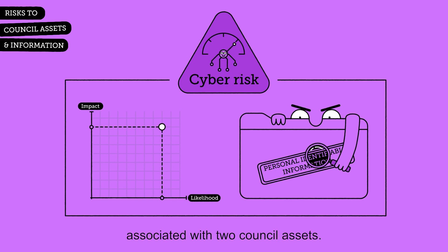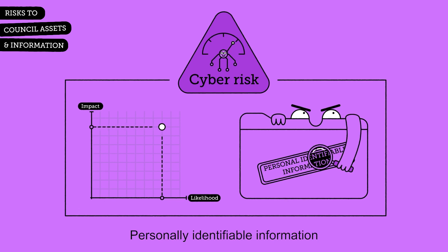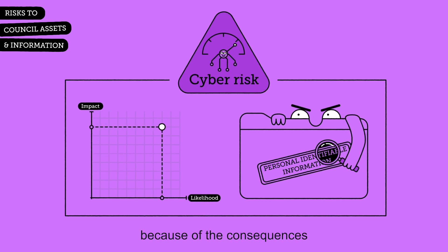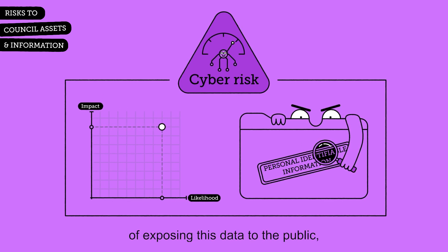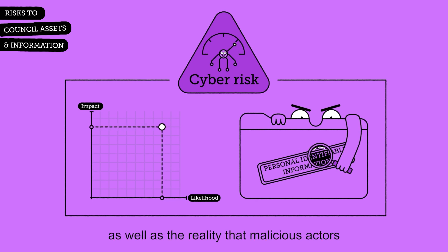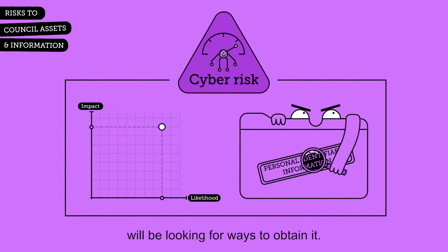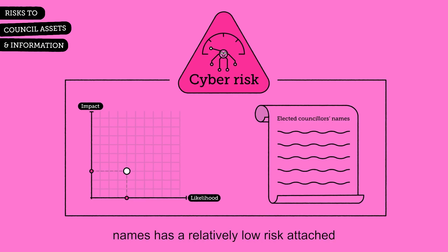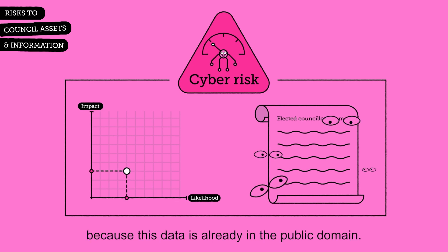Let's think about the risk associated with two council assets. Personally Identifiable Information, or PII, has a high cyber security risk because of the consequences of exposing this data to the public, as well as the reality that malicious actors will be looking for ways to obtain it. By contrast, a list of elected councillors' names has a relatively low risk attached, because this data is already in the public domain.